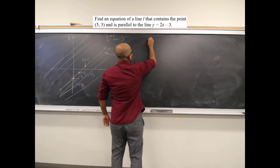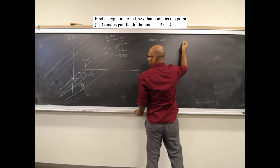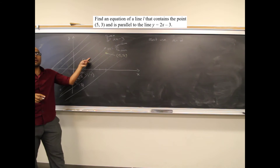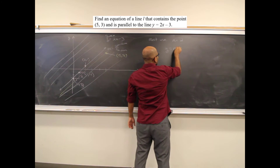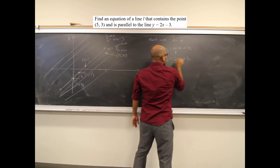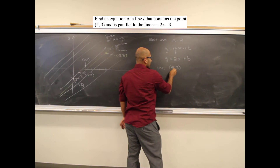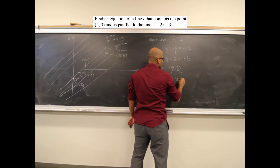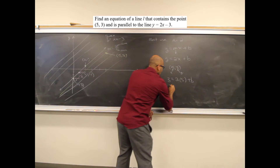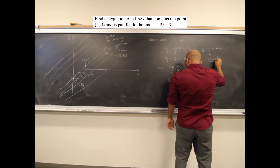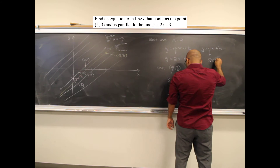We must use m equals 2, because it's parallel, so same slope. They didn't give me the y-intercept — just some random point — so I plug in (5, 3): 3 equals 2 times 5 plus b, giving 3 equals 10 plus b, so b equals negative 7. The equation is y equals 2x minus 7.